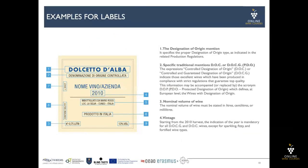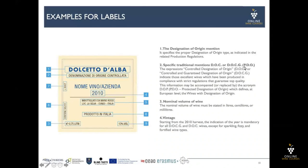Examples from label levels. The designation of origin mentioned — it specifies the proper designation of origin type as indicated in the related production regulation. We need to put here the specific traditional mentions, for example DOC or DOCG, or different specific traditional mentions.